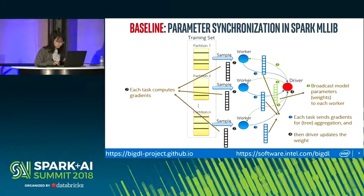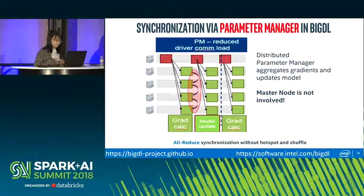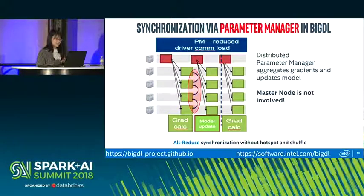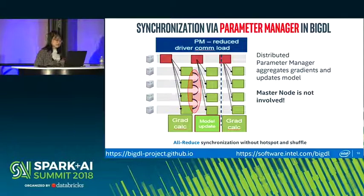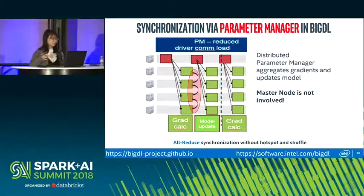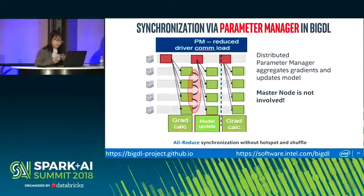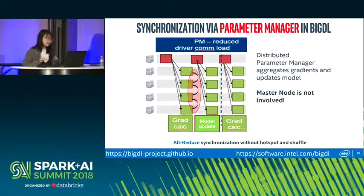In BigDL, we perform all-reduce synchronization — during synchronization there is no hot spot and no shuffle. At the beginning of each iteration, similar to Spark ML, the driver generates Spark tasks. These tasks compute the gradients, but instead of sending gradients back to the driver, they are exchanged and updated between the workers. Similarly, the weights are also updated and exchanged on each worker. During synchronization, there is no centralized node involved.